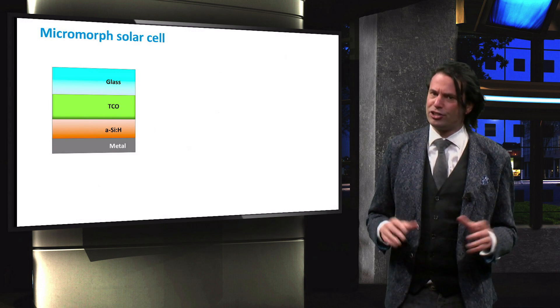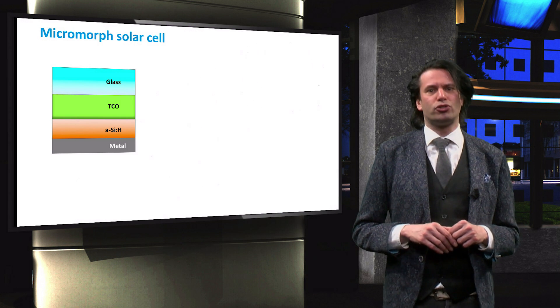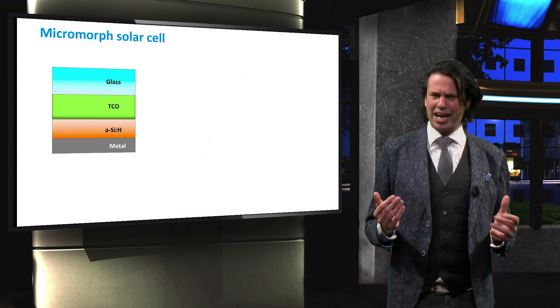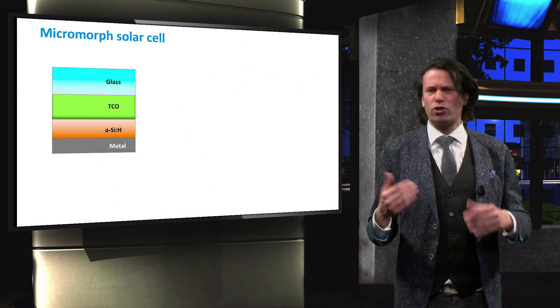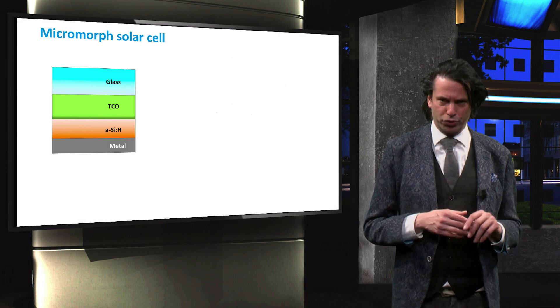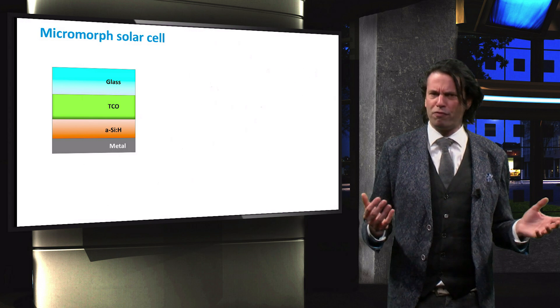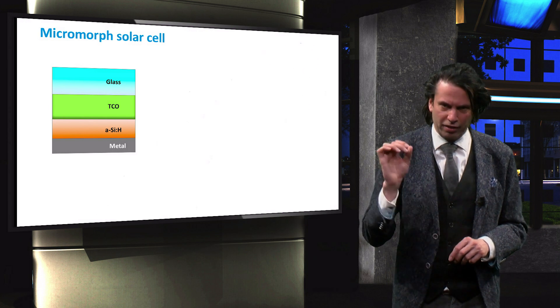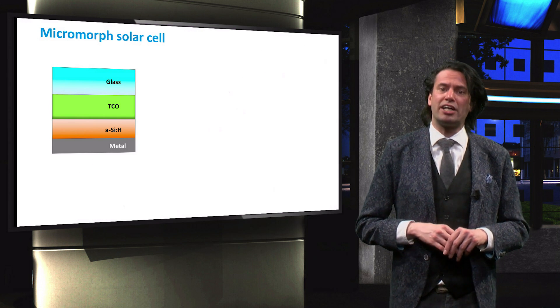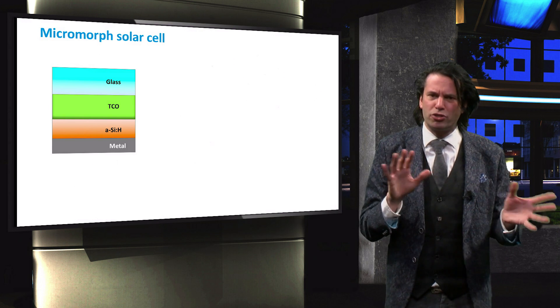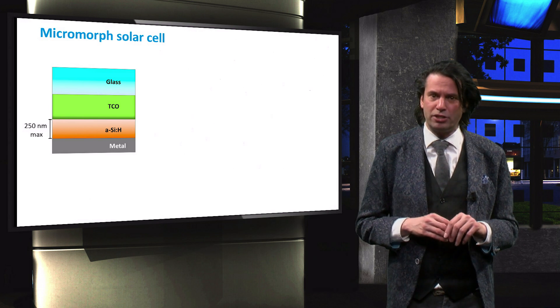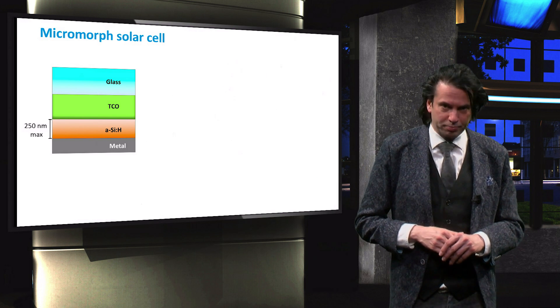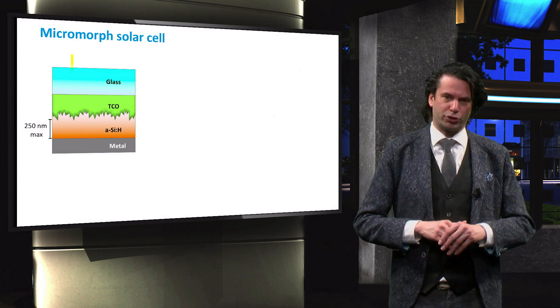We see here a single junction amorphous silicon solar cell with flat interfaces. Amorphous silicon has a high defect density and consequently a short diffusion length. Furthermore, amorphous silicon suffers from light-induced degradation. The thickness of an amorphous silicon absorber layer is therefore limited to around 250 nm to establish high values for VOC and fill factor and stable external parameters.